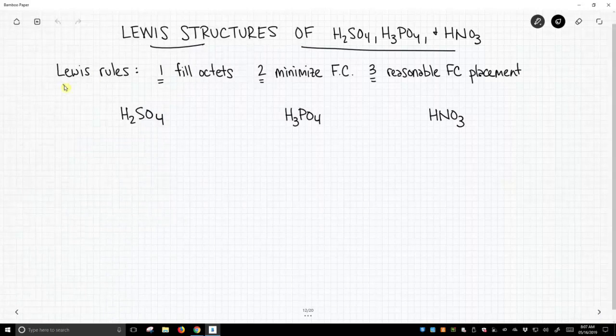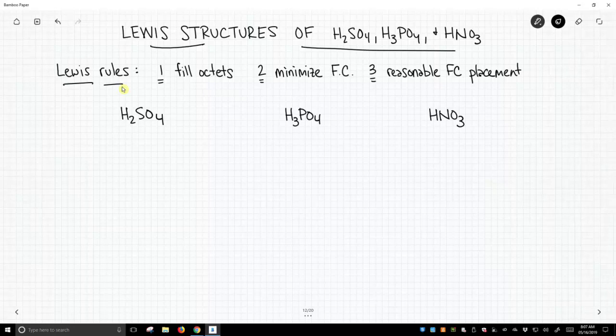So what are the rules for Lewis dot structures? The rules are, number one, you want to fill the octets of your atoms.